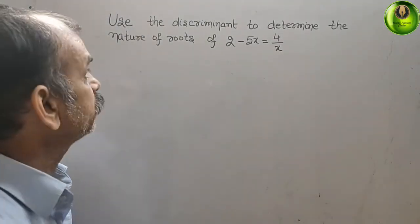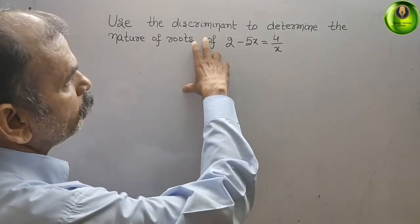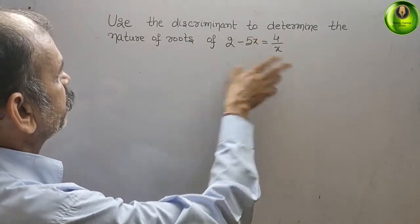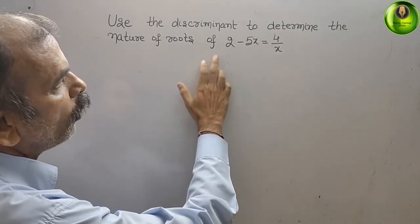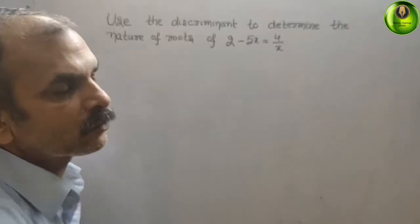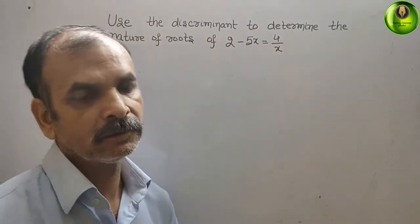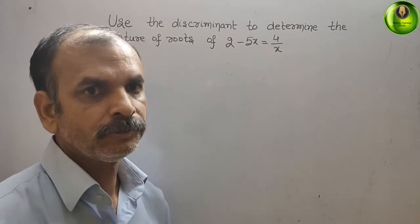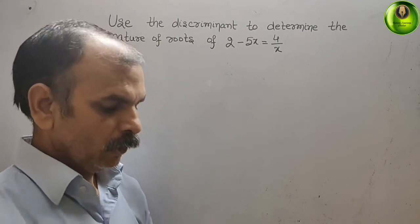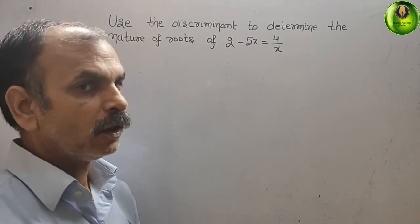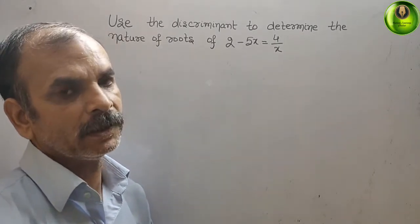The question is: use the discriminant to determine the nature of roots of 2 minus 5x equals 4 by x. For this, we have to use the discriminant method.